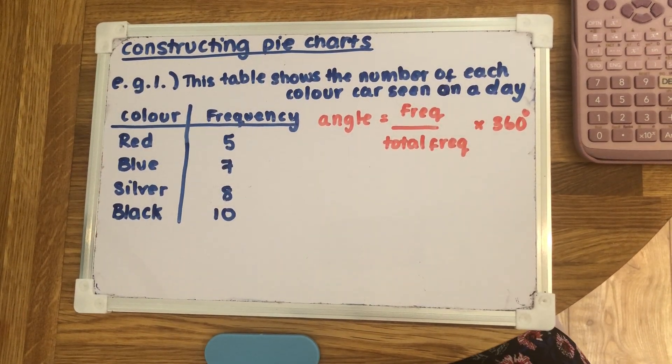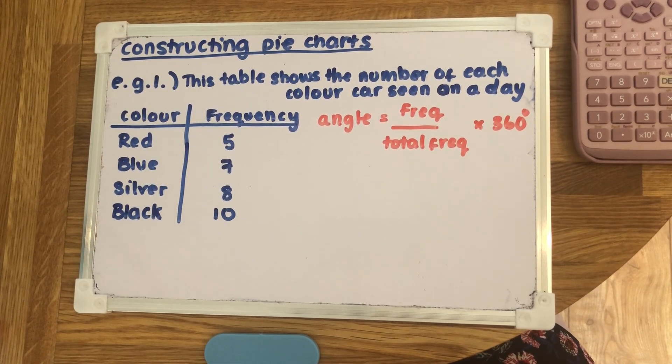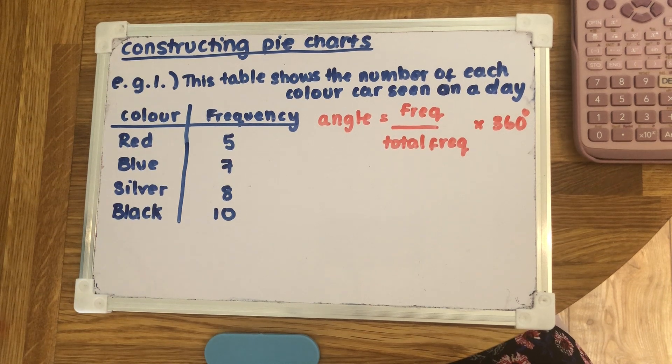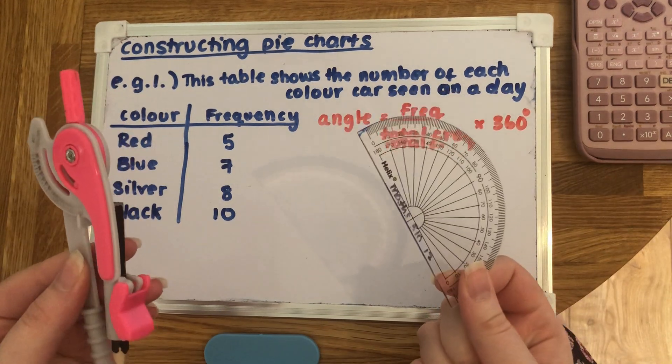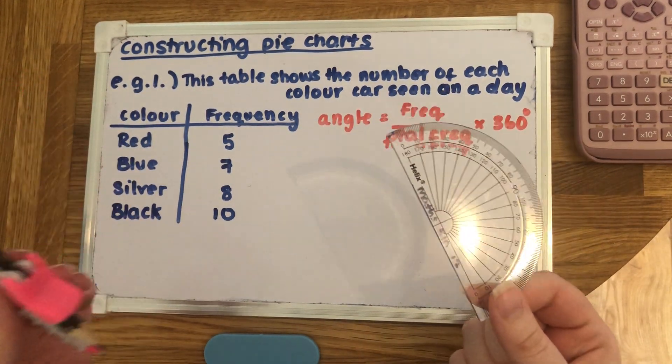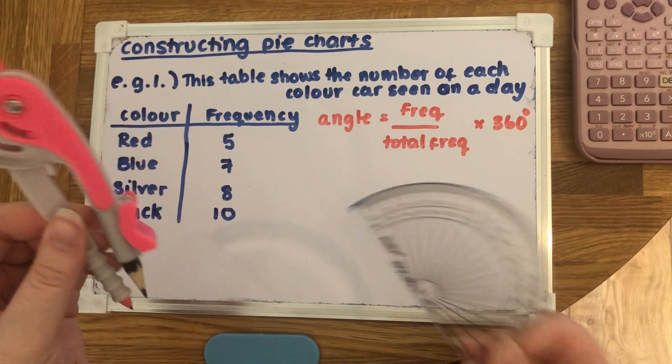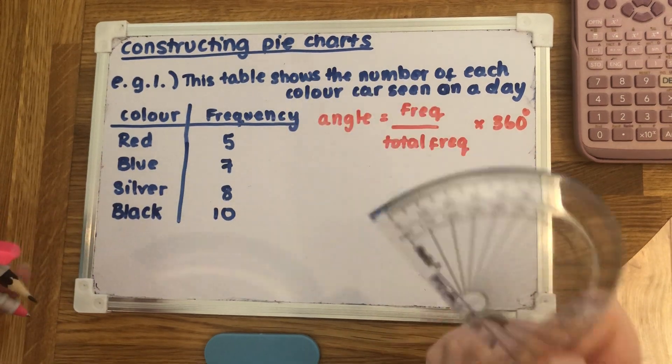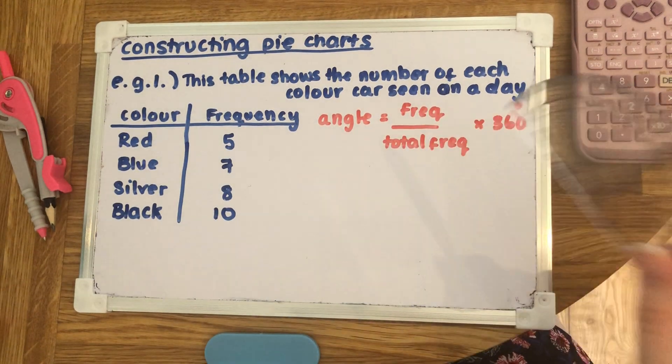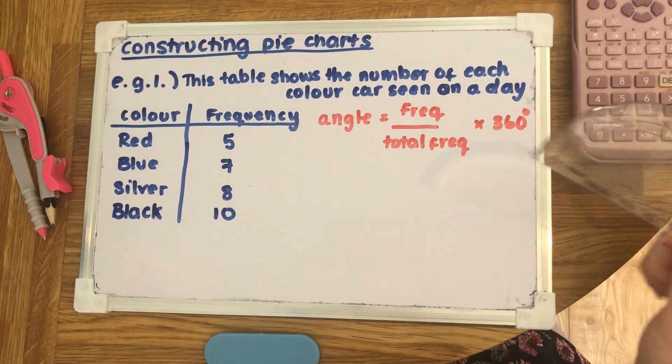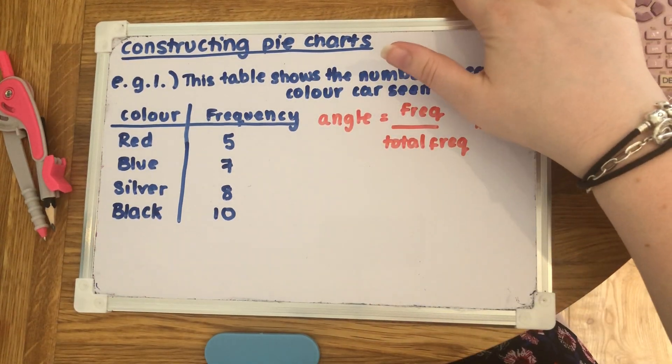In this video we're going to be doing how to construct pie charts. It's just sometimes a little bit fiddly, and to do this you are going to need two bits of equipment: a compass and a protractor. One's obviously going to be doing the angle bit and the other one is to draw the circle. If you don't have a compass, it's not the end of the world, as long as you've got a protractor. I'll show you how to draw a circle with it. If you don't have a protractor you're going to have to go and get one because you can't do this topic without it.